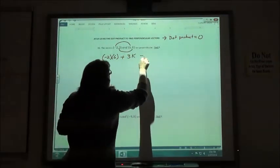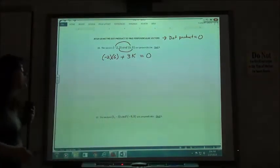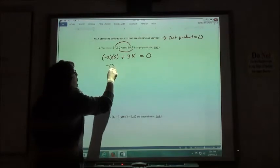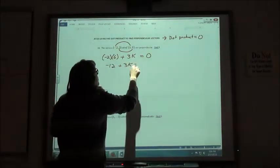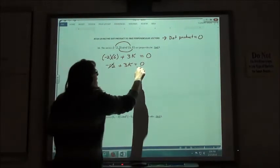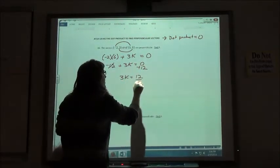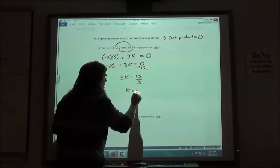If it's going to be perpendicular, that has to equal 0. So I would get negative 12 plus 3k equals 0. I'm going to add my 12. So 3k equals 12 and divide by 3. k would have to be 4.